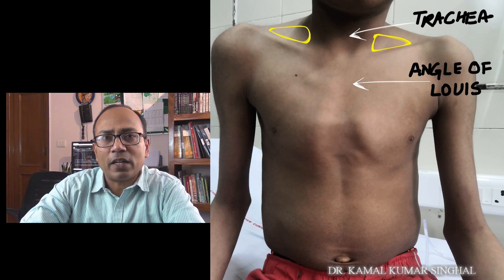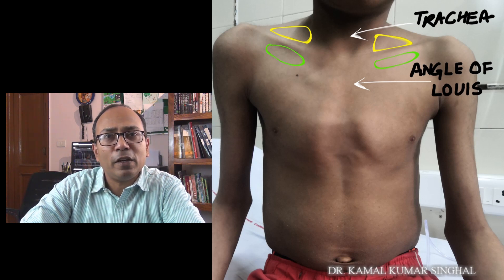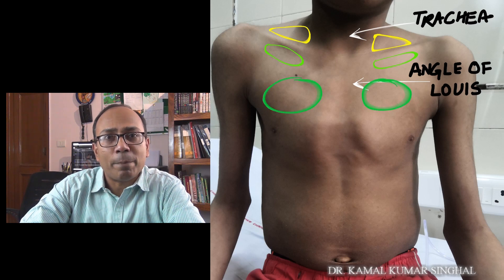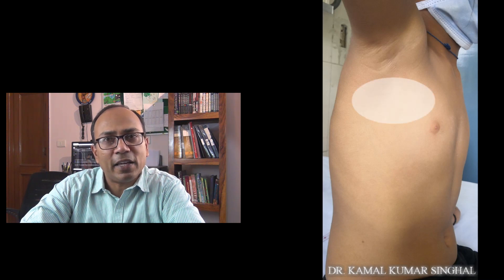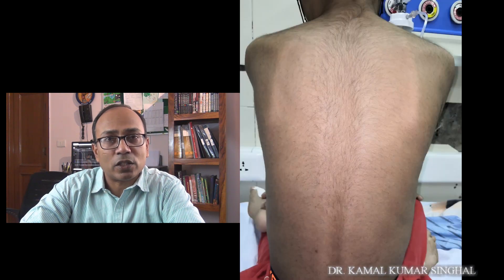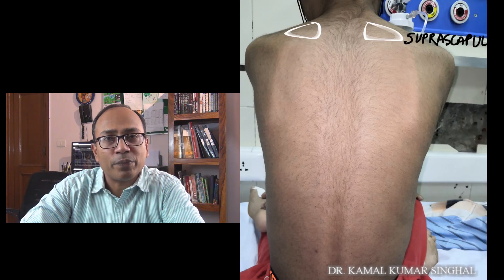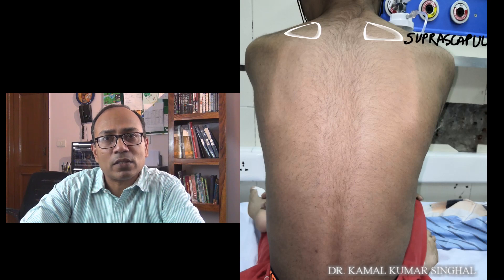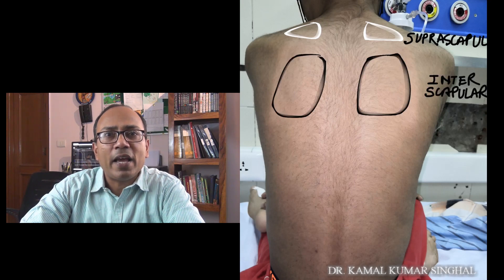Thoracic areas are divided anteriorly into the supraclavicular region, which is the space just above the clavicle, the infraclavicular region which is the space just below the clavicle, mammary and inframammary. Laterally it is divided into axillary and infraaxillary regions, and posteriorly it is divided into suprascapular, the space just above the scapula, interscapular, the space just between the scapulae, and infrascapular, the space below the scapula.